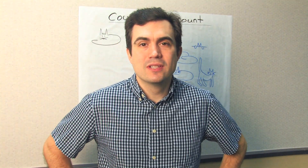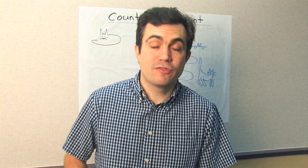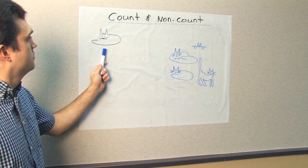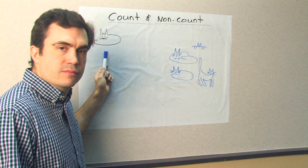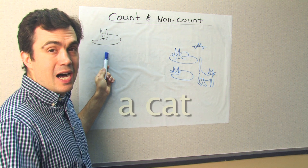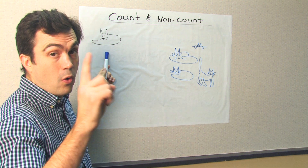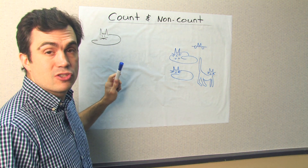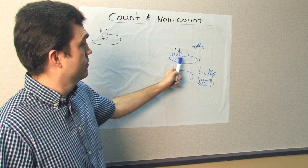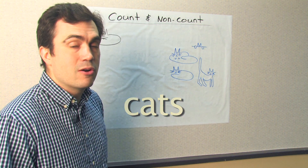Hi, I'm teacher Tom. Let's talk about count and non-count nouns. For example, this is a cat. A cat. One cat. Countable, right? Cat or cats are countable.